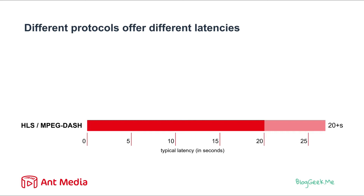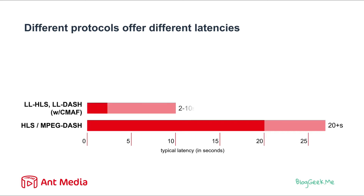So we can't really consider that live. This is why for both of them we've got the LL variants — low latency variants of HLS and DASH: LL-HLS and LL-DASH, with CMAF. CMAF is a kind of framework for mapping chunks into files. This enables us to run HLS and DASH in low latency, and then we get anywhere between 2 to 10 seconds of latency, depending on what optimizations we make for these streams.